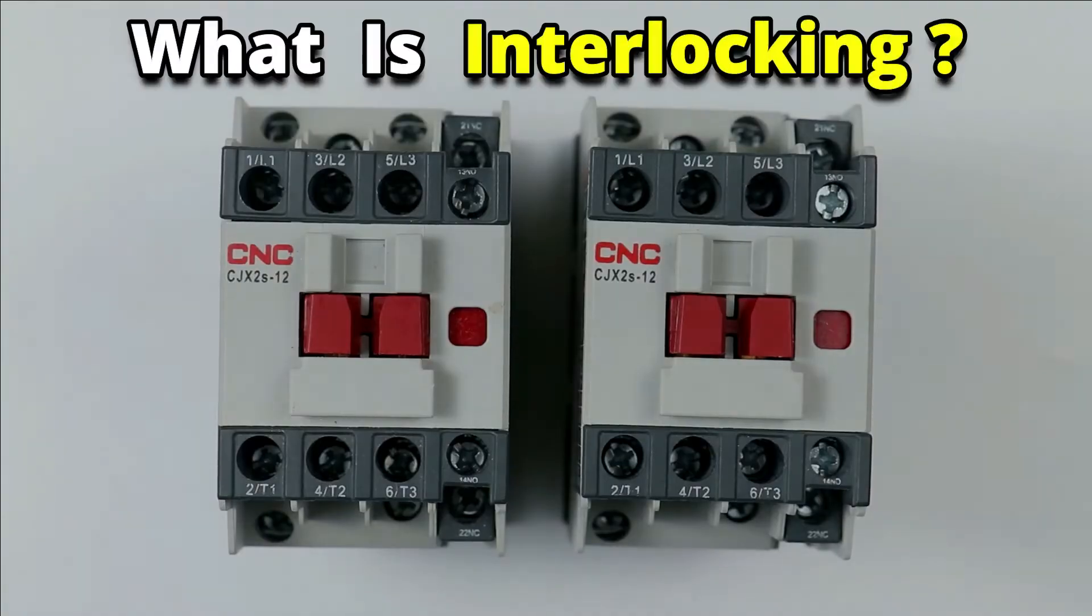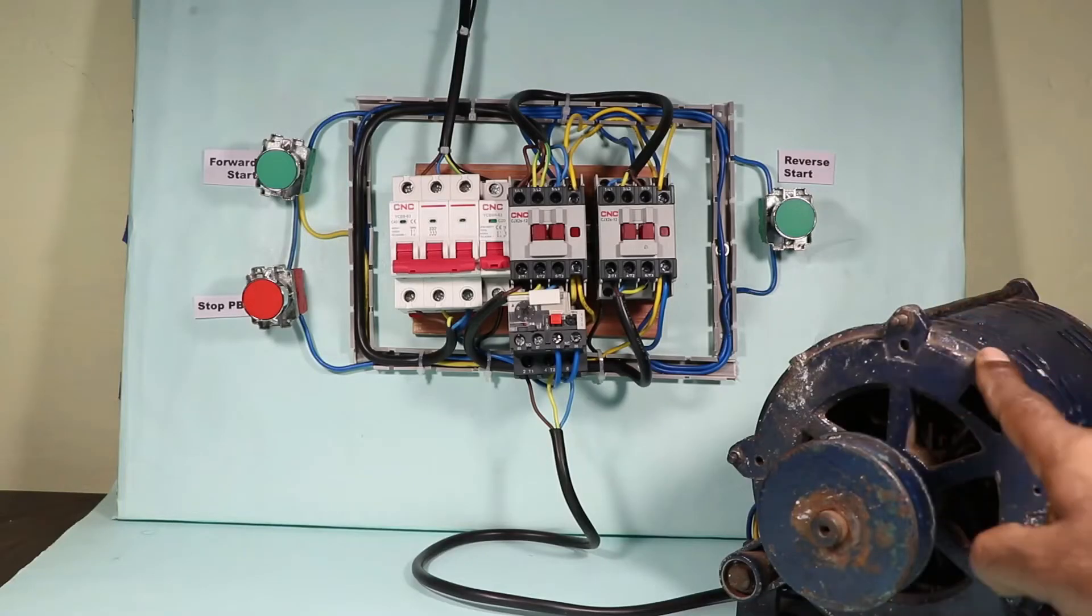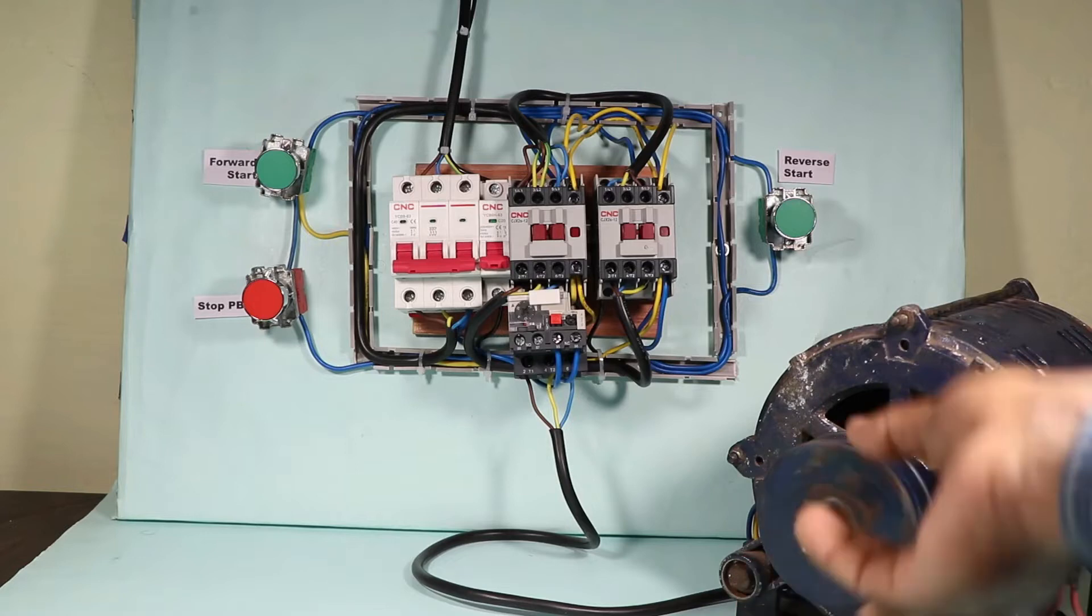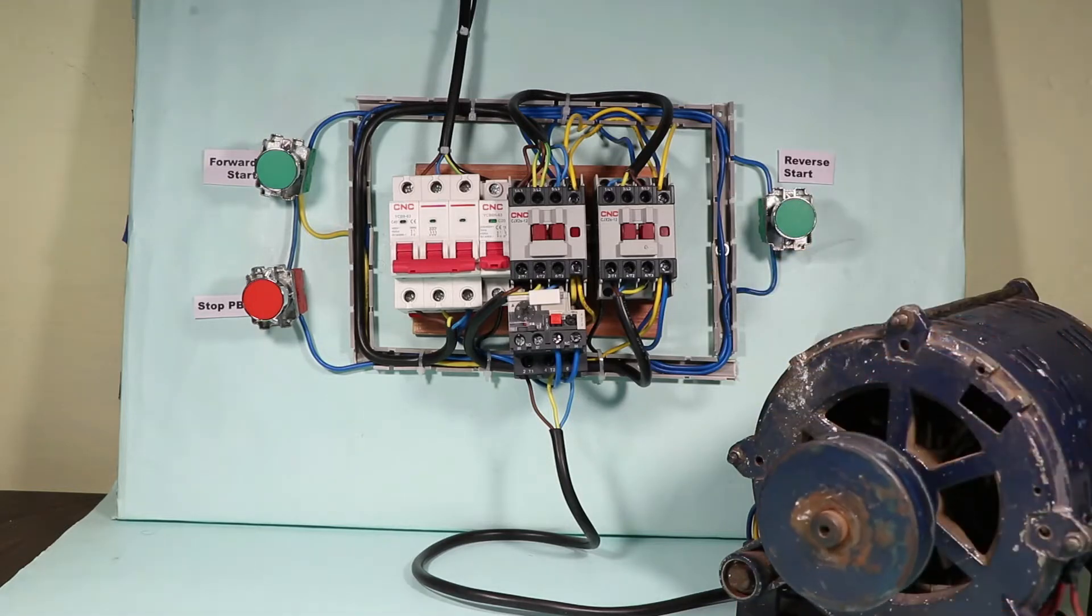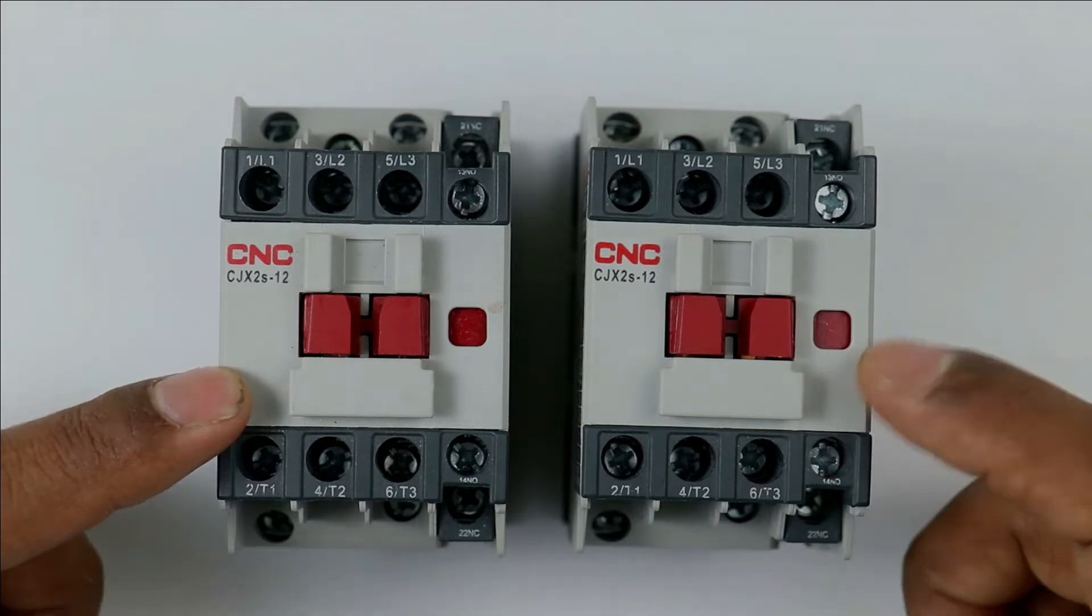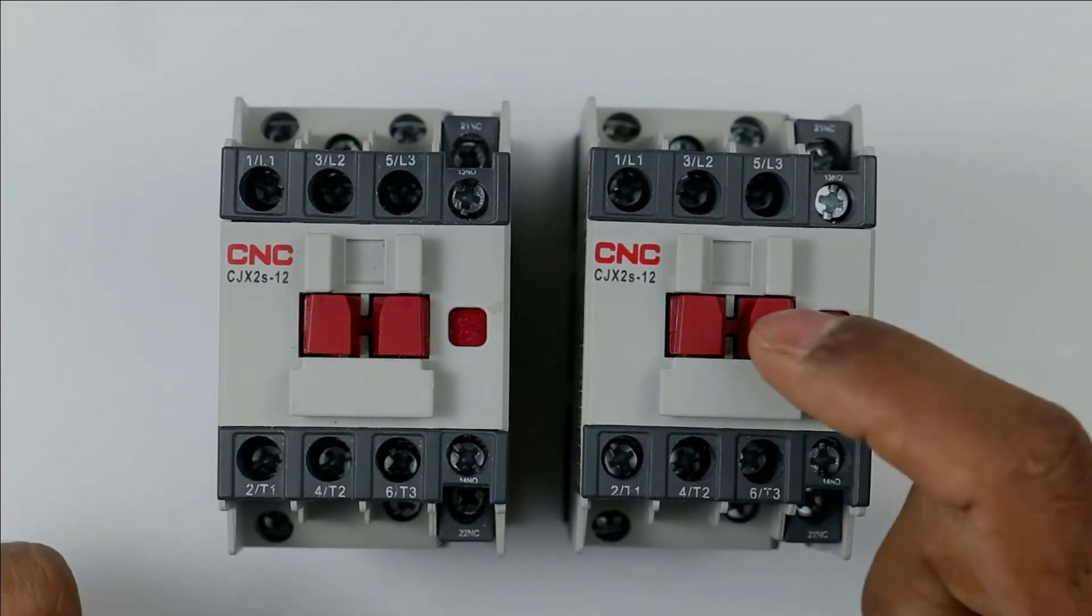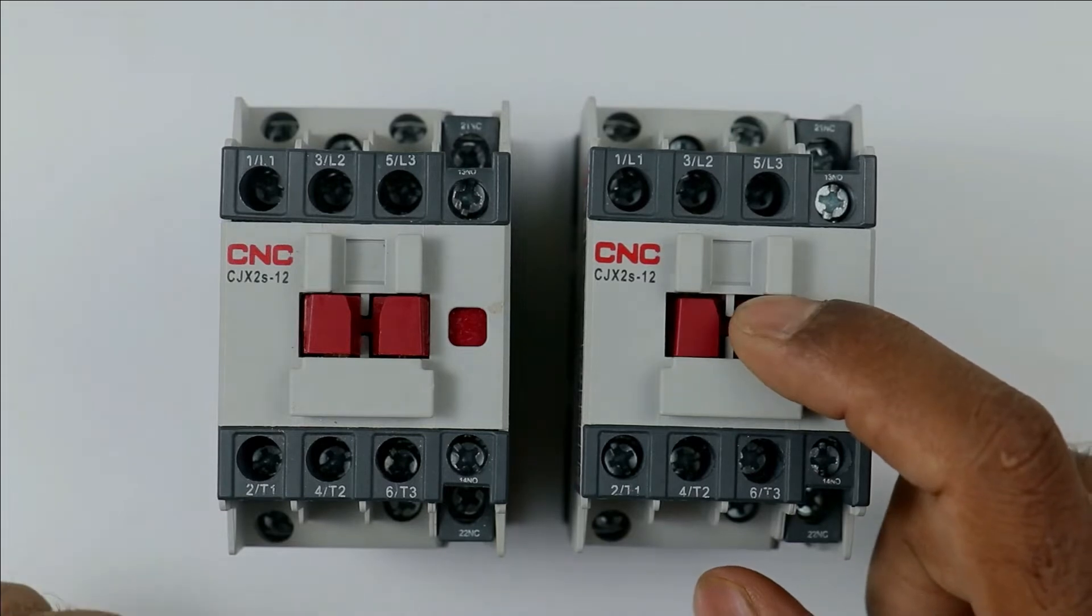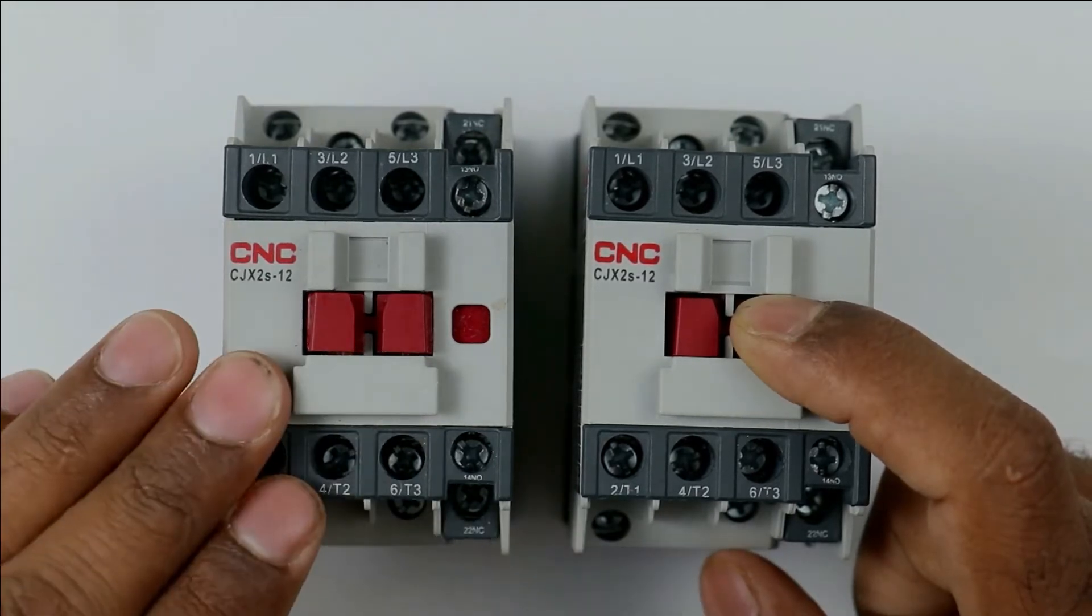First we will learn what is interlocking. Suppose you have a motor and you need to run this motor in forward as well as in reverse direction. Then you have to use two different contactors. But condition here is only one contactor should be operated at a time.